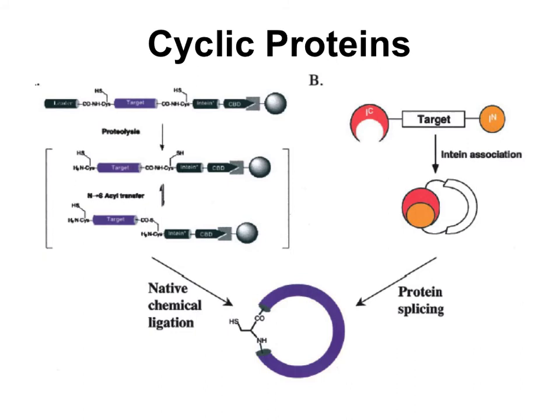One can also generate cyclic proteins. Here, the protein is expressed as part of the pCYB vector, proteolysis removes a leader protecting group exposing the N-terminal cysteine, and then the N-to-S acyl transfer followed by cyclization generates the cyclic peptide. You can also fuse a split intein around a target protein so that the split intein assembles and performs protein splicing to generate cyclic proteins.